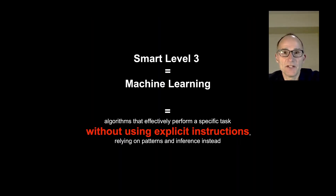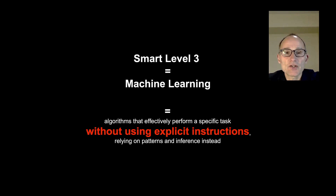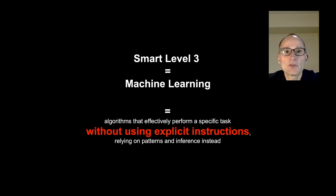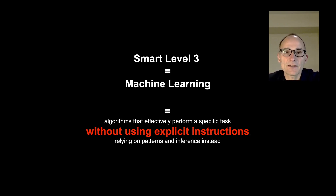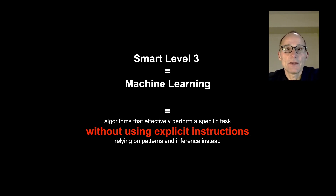The number of sensor combinations needed for autonomous driving of vehicles or vessels is exceedingly large, such that one can no longer write a computer program that simply says 'if this, then do that.' Rather, we move to what we refer to as smart level three: machine learning. For our purposes, this refers to algorithms that effectively perform a specific task, but importantly, without using explicit instructions — relying on patterns and inference instead.